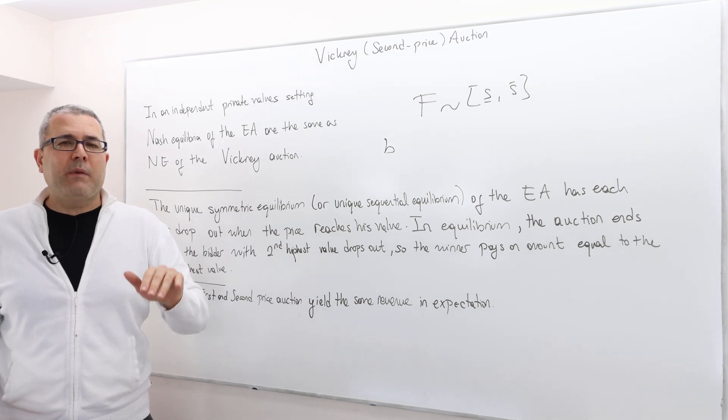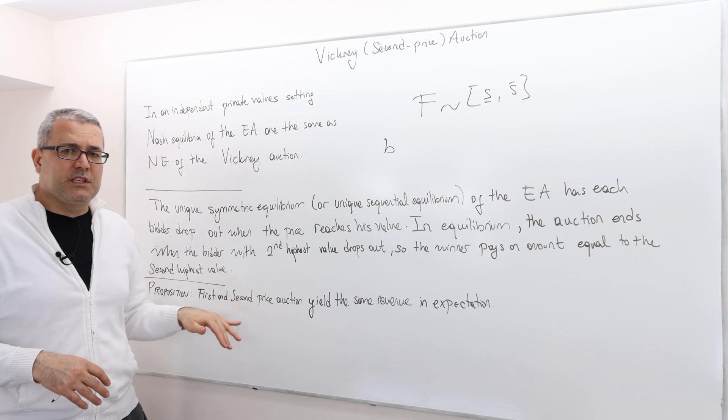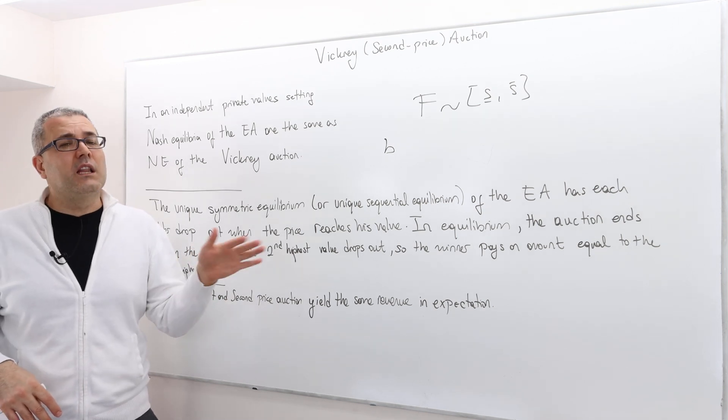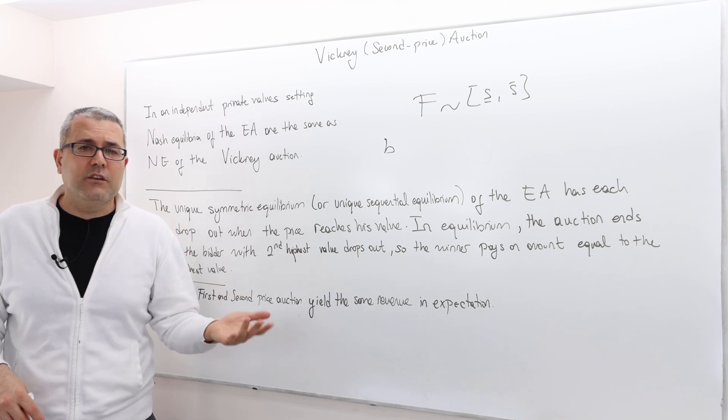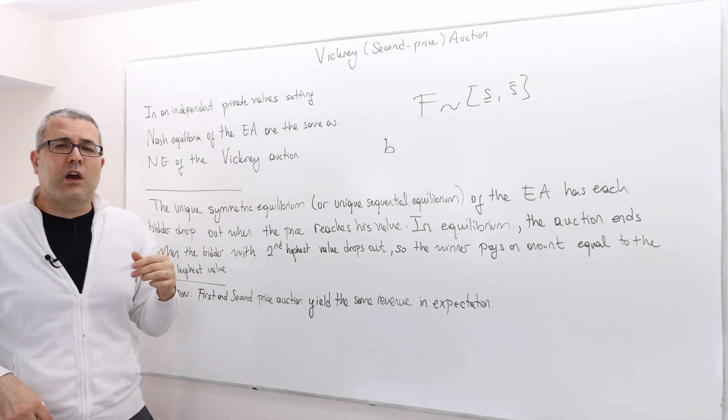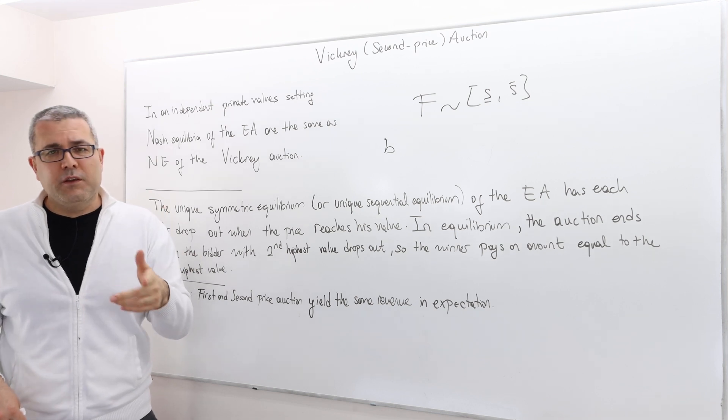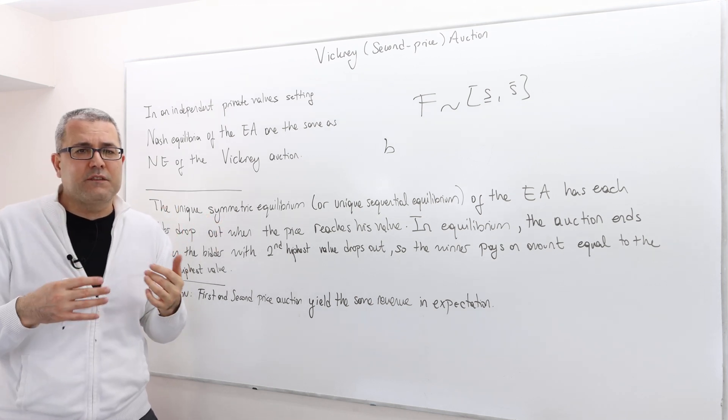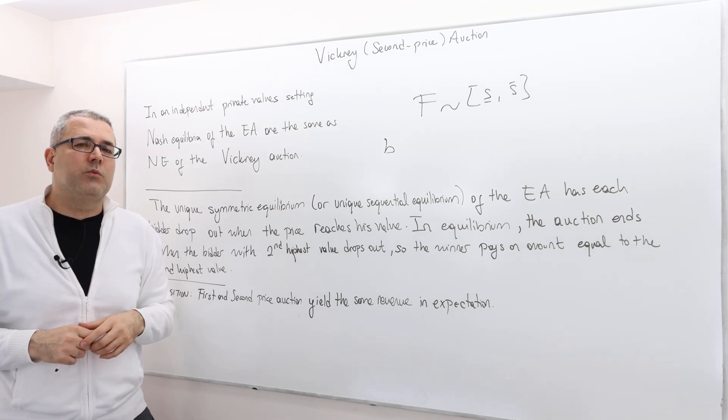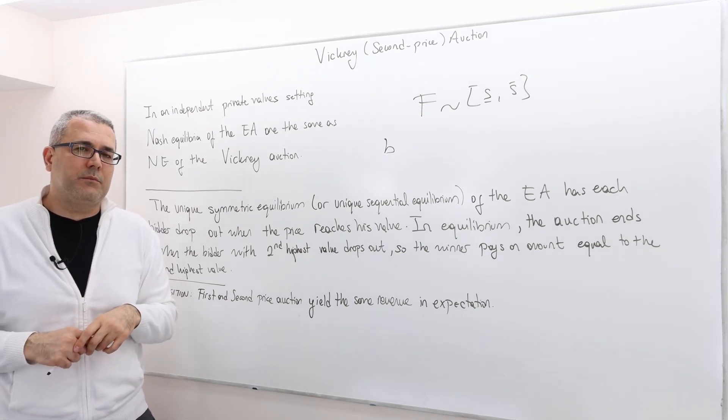I'm going to talk about an even stronger result than this, which basically will say a lot of auctions actually lead to same revenue under independent and private value setting. But obviously, those auctions should satisfy some properties. So we call it revenue equivalence theorem, and this is what we will be talking about in the next episode.